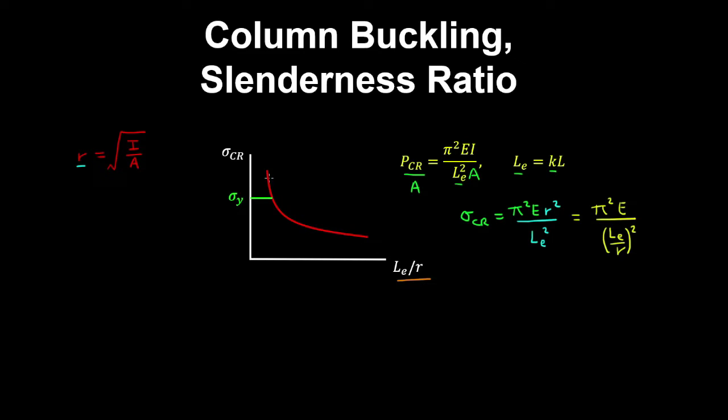So you get a curve that looks something like this. If you have a very slender column that looks something like this, for example, it has a long length relative to the radius of gyration of this cross section.